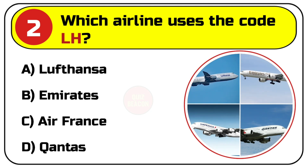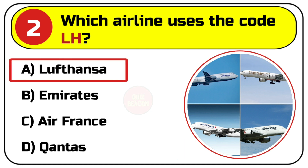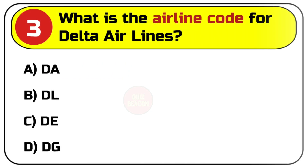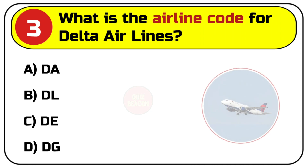Question number two: which airline uses the code LH? Options are A. Lufthansa, B. Emirates, C. Air France, D. Qantas. Correct answer is A. Lufthansa.